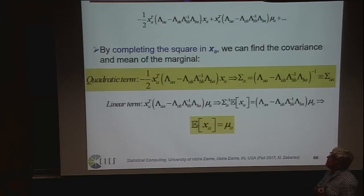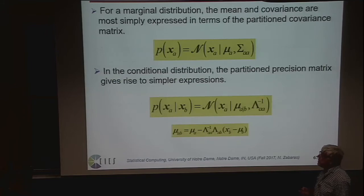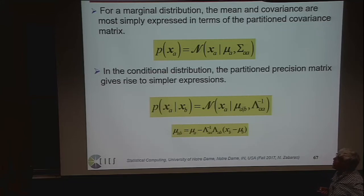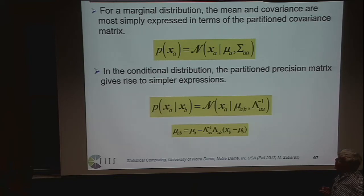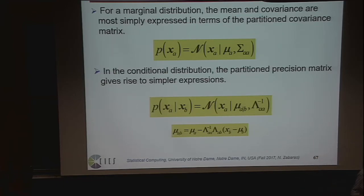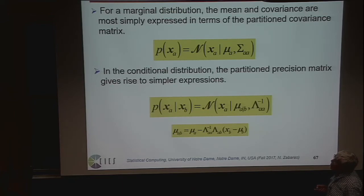If you do all of this, the answer comes out to be a very simple one — like a miracle. The marginal of xa has mean mu_a and covariance sigma_aa. A result you can use immediately. For the marginals, the answer in terms of sigma is a straightforward one. For the conditional, it was a little more complicated. Here is also the conditional summarized: the mean was a bit more complicated but written explicitly in terms of sigma or lambda partitions. And all of these derivations using these decompositions are in the slides.